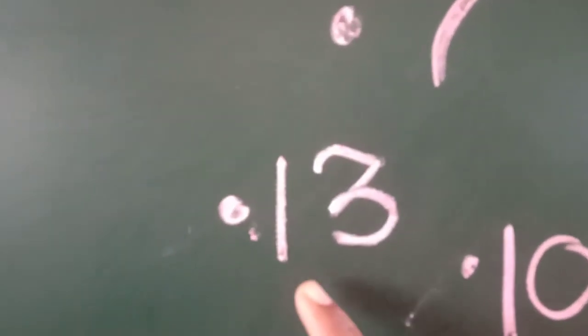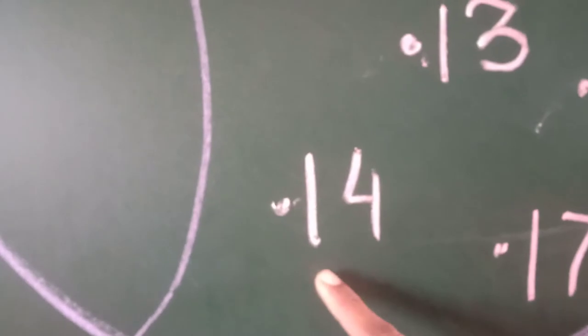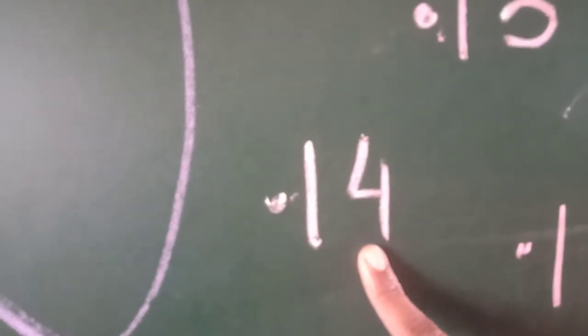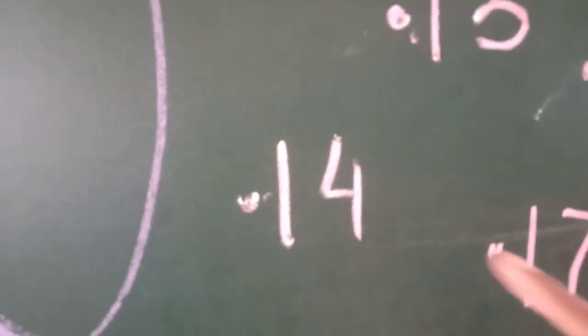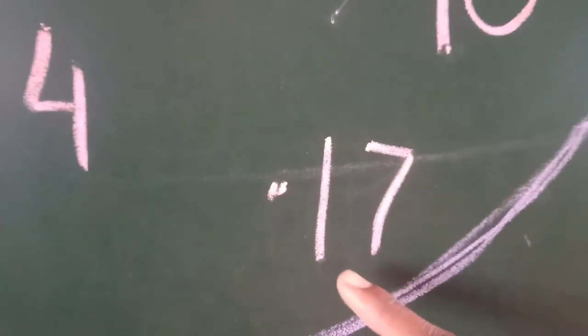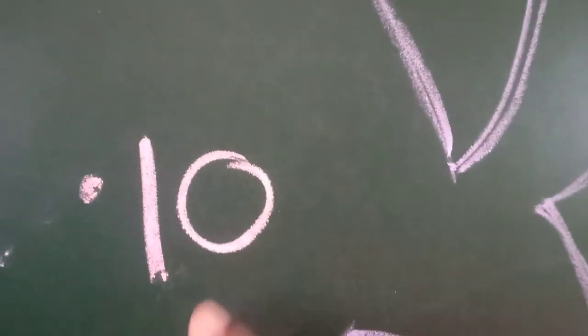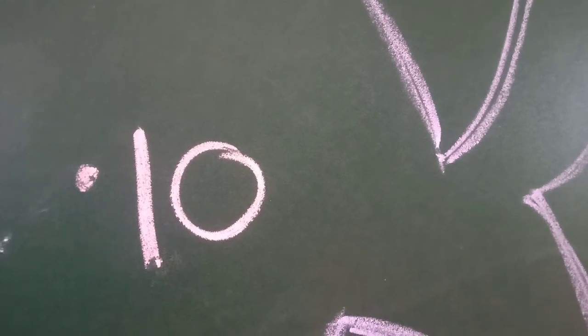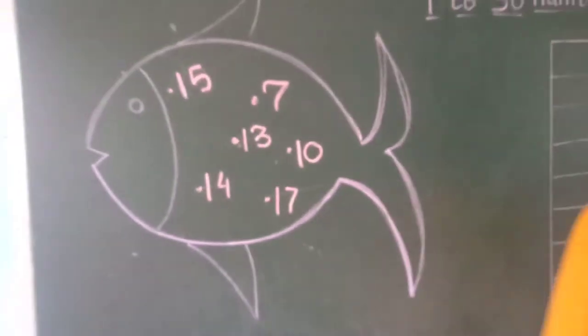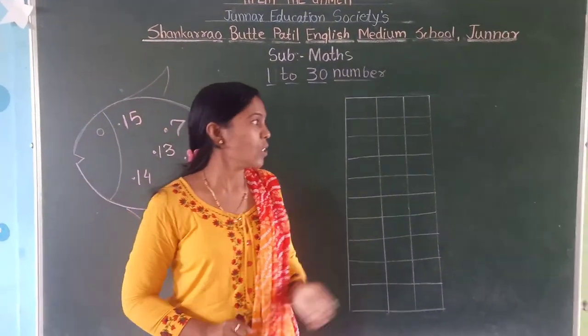And which number is this? 1, 3, 13. And this is number 14. And tell me which number is this? Yes, who will tell me? 1, 7, 17. And this is number 10. Ok students, now you can identify these all numbers. Ok kids, so kids, today we will revise 1 to 13 numbers.